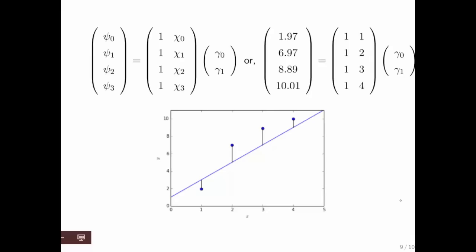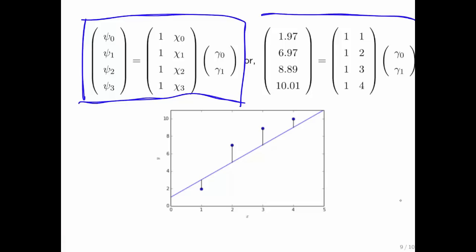We can set that up as this linear system or this linear system. And notice that we happen to have written the right-hand side on the left here. But what we have here is a matrix. We have a vector for which we would like to solve, and we have a right-hand side.